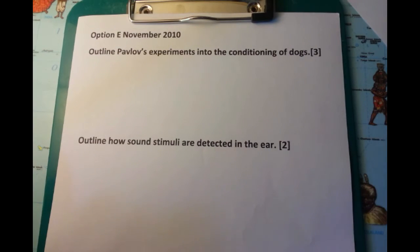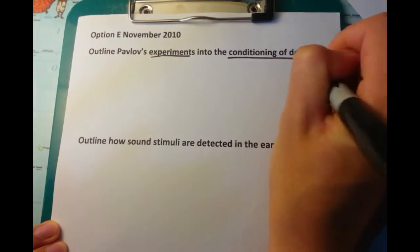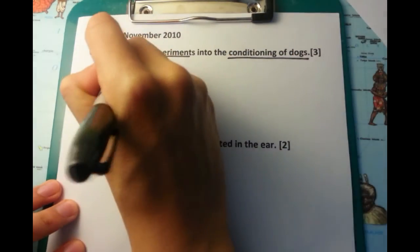Option E papers are quite nice. Outline Pavlov's experiments into the conditioning of dogs.